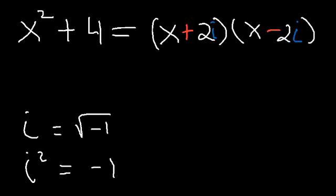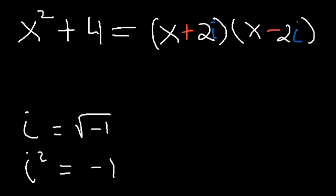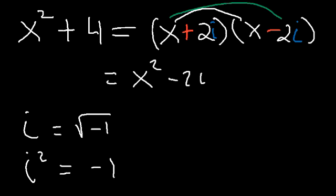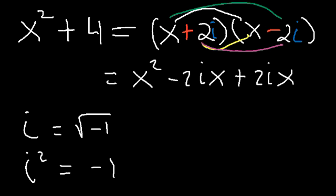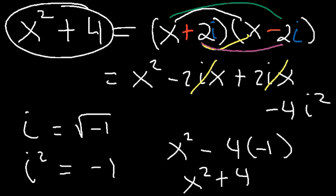Knowing this, let's prove that this is indeed the factored form of this expression. We can do so by FOILing the two binomials. x times x is x squared, x times negative 2i is negative 2ix, and 2i times x is positive 2ix. 2i times negative 2i is negative 4i squared. These two middle terms cancel, and since i squared is negative 1, this gives you x squared plus 4.